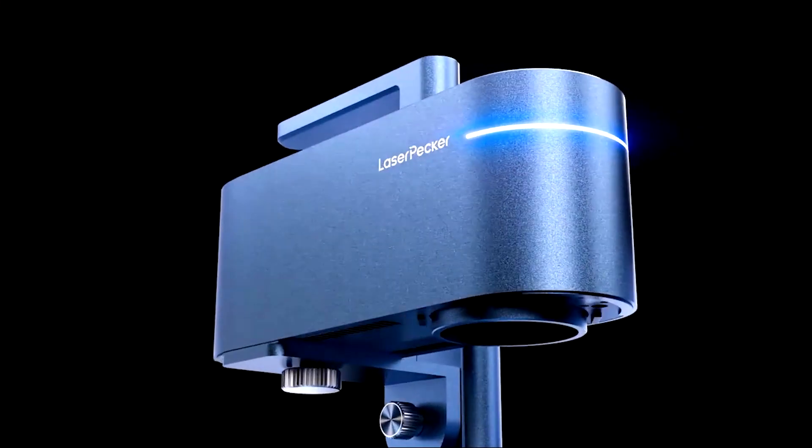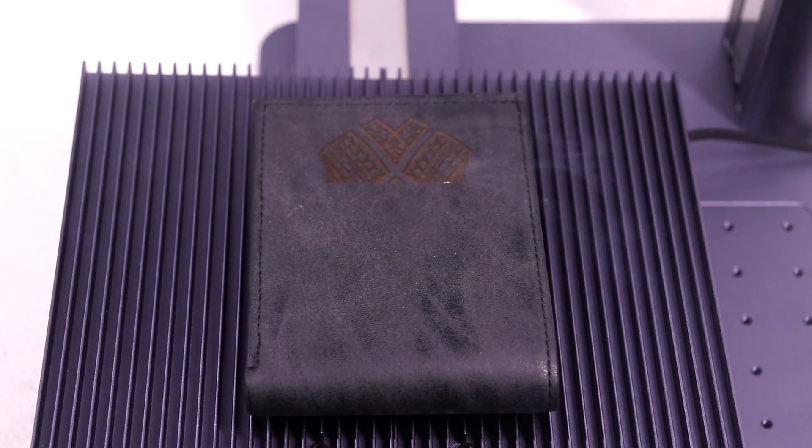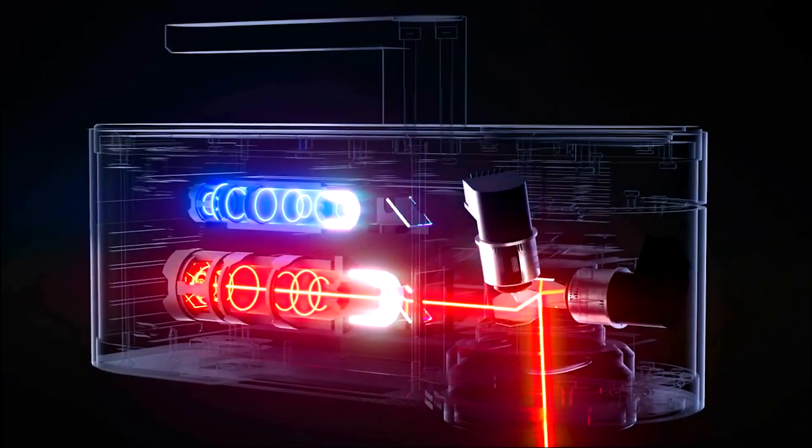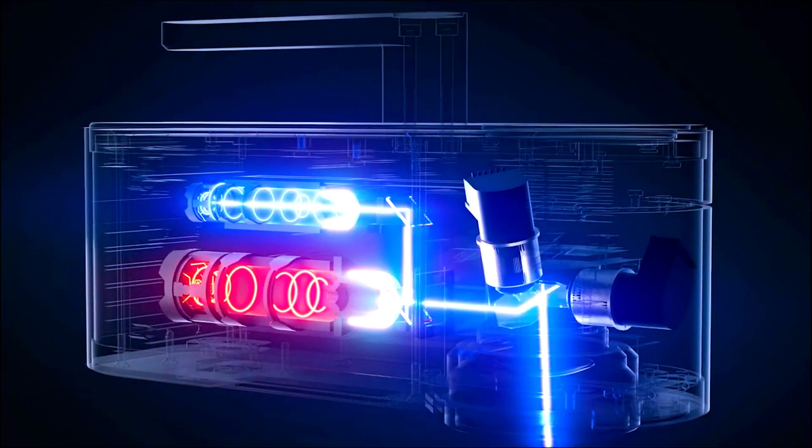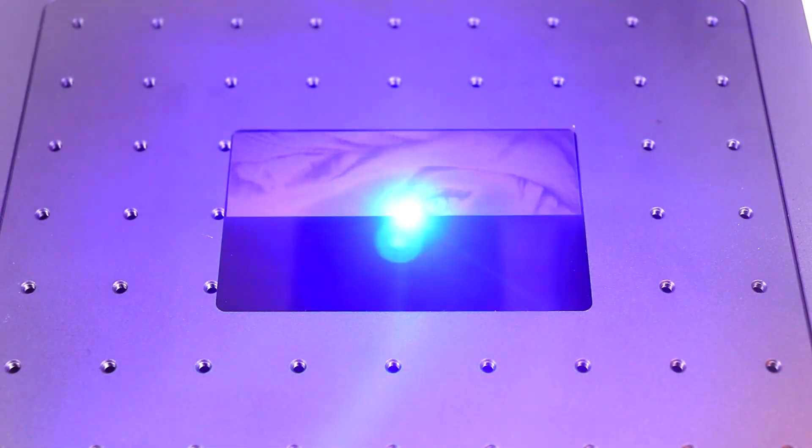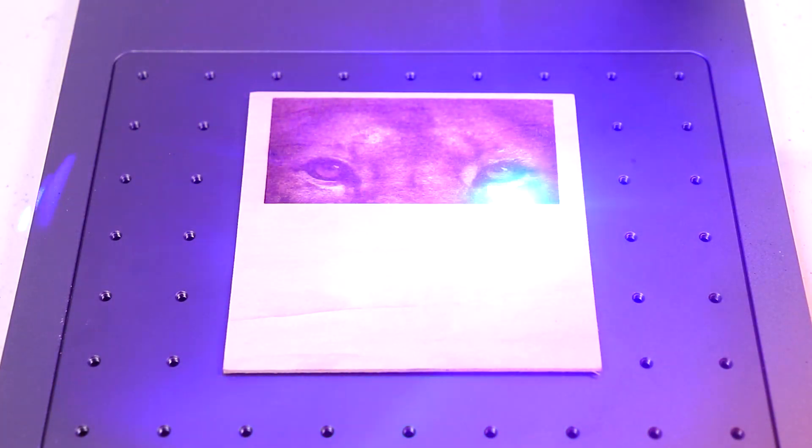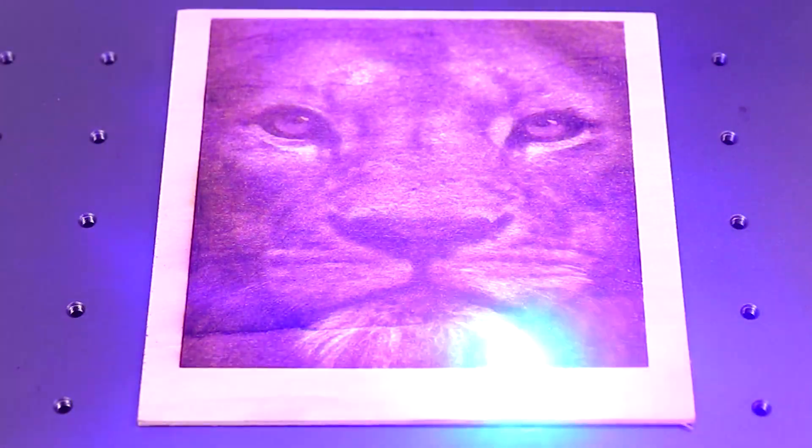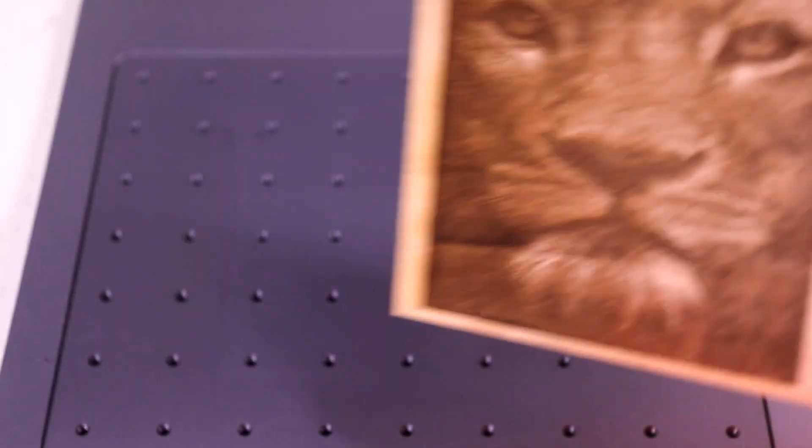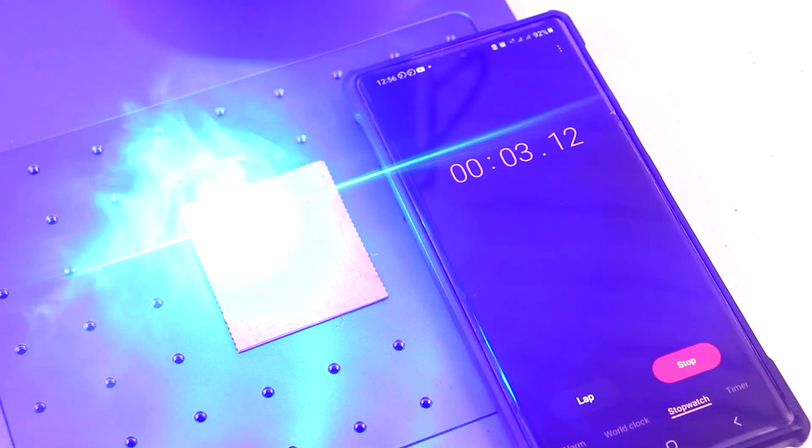Laserpecker integrated a 450nm diode laser with 10W high-speed engraving and cutting and a 1064nm pulsed fiber laser with 2W and a whopping 8K high-resolution engraving in one device. So they improved the engraving accuracy to an unprecedented 8K down to 0.01mm granularity with the latest high-speed galvanometer technology.